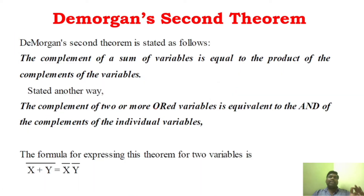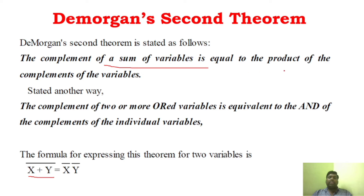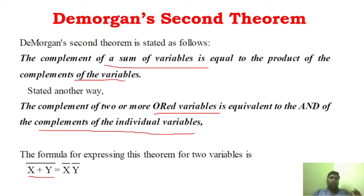Now we will see De Morgan's second theorem — just the opposite of the first. The complement of the addition (sum) of two variables is equal to the product of the individual complements. The complement of a sum of variables is equal to the product of the complements of the variables. The complement of two or more OR variables is equivalent to AND of the complement of individual variables. The sum of the complements is equal to the product of individual complements.